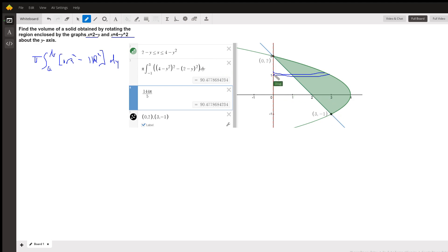So the outer radius is the distance from the axis of revolution to the outer graph. And that distance is in terms of y. For every y value from negative 1 to 2, this distance will be x equals 4 minus y squared. That's the outer radius there. Minus the inner radius will be the distance from the axis of revolution to here. That will actually create a hole in the solid that's generated. That's why it's called the washer method.